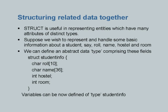We are familiar with the notion of arrays. An array permits us to define a collection of similar objects — roll numbers, salaries, names, or whatever. You can have an array of 10,000 elements, but each element must be of the same type.